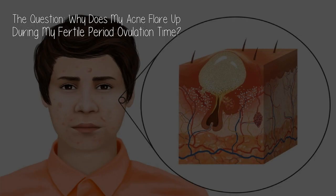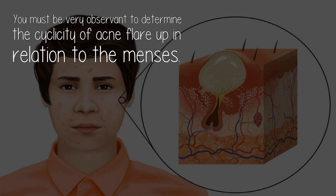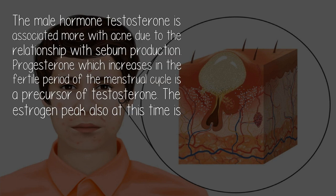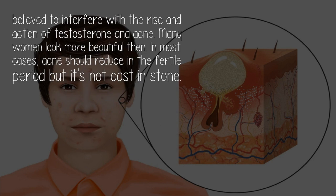Why does acne flare up during the fertile period or ovulation time? You must be very observant to determine the cyclicity of acne flare-up in relation to the menses. The male hormone testosterone is associated more with acne due to its relationship with sebum production. Progesterone, which increases in the fertile period of the menstrual cycle, is the precursor of testosterone. The estrogen peak, also occurring at this time, is believed to interfere with the rise in action of testosterone.